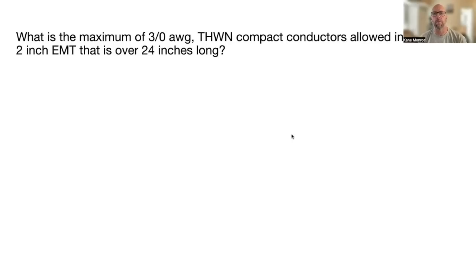What is the maximum of 3/0 awg THWN compact conductors allowed in a section of 2 inch EMT that is over 24 inches long? That's five of them. NEC Annex C, Table C1(A). Make sure you're looking in those compact conductor tables when you're looking this one up.